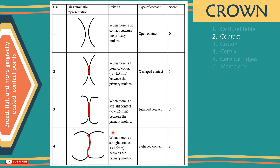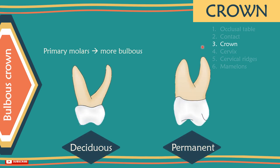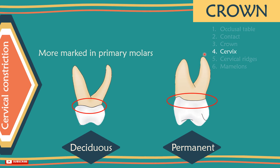Number 3 – Crown shape: primary molars have a more bulbous crown form than permanent molars, making matrix placement more challenging. Number 4 – The cervical portion: cervical constriction is more marked in primary molars since the crown is more bulbous in form. Therefore, if the base of the proximal box is extended too far gingivally, it will be difficult to cut an adequate floor without encroaching on the pulp.